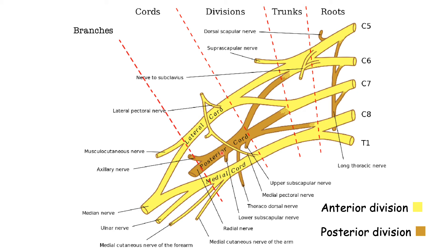Now these cords are named according to their position relative to the brachial artery. So the posterior cord runs posteriorly to the brachial artery, the medial cord medially, and the lateral cord laterally.